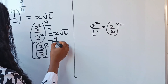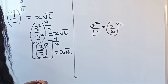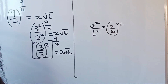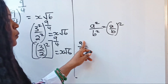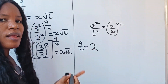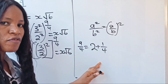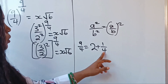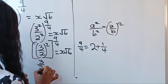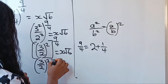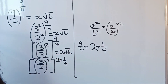So we have (3/2) squared raised to the power of 9/4, equal to x root 6. Now we can express 9/4 differently: 4 divides 9 giving 2 remainder 1, so 9/4 is the same as 2 plus 1/4. Let's replace this: we can write (3/2) squared raised to the power of 2 plus 1/4.